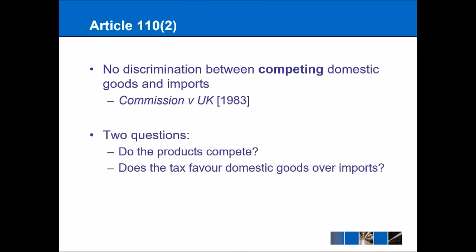Article 110 Part 2 is more broad because it looks at competing domestic goods and imports. Commission v UK (1983) looked at a distinction between French wine and English beer — French wine was taxed at a higher rate than English beer. The Commission brought a case under Article 258, and the question was: do the goods compete against each other? Whereas in John Walker, beer and wine might seem very different — one made from grain, one from grapes — in this case the Court said the goods do directly compete because when you go to the pub you might order a beer but some people might order a wine. They compete directly in the alcohol market.